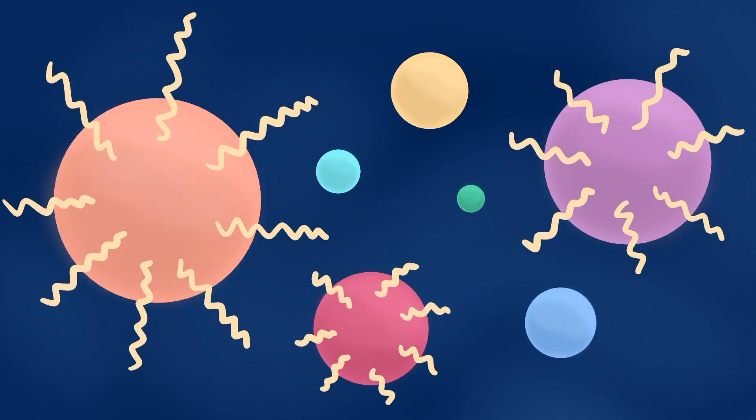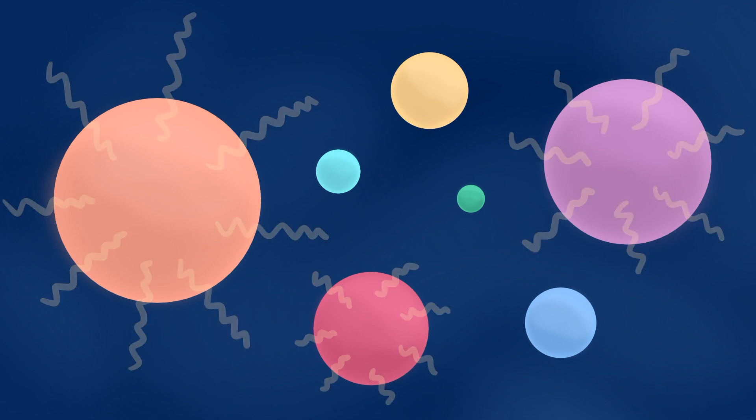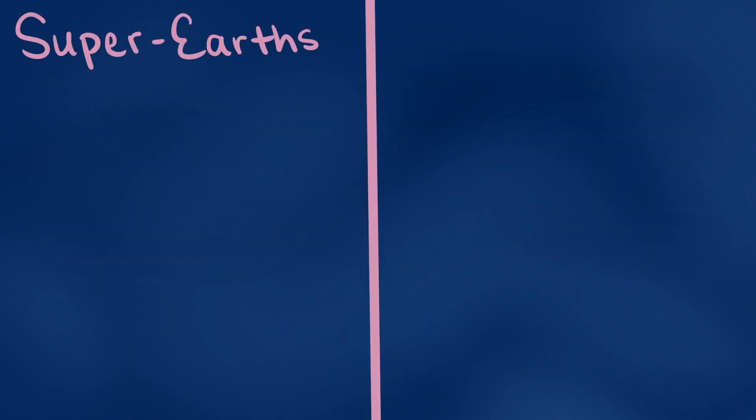This model also tells us that since the timescale for envelope loss can range from several hundred millions of years to 10 billion years, some planets should be undergoing atmospheric loss even today. Hence, the abundance of super-earths relative to sub-neptunes increases with time.